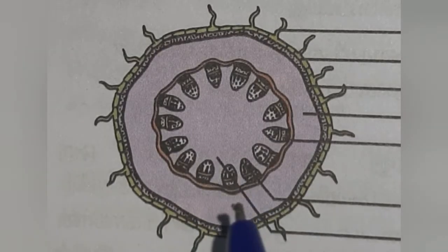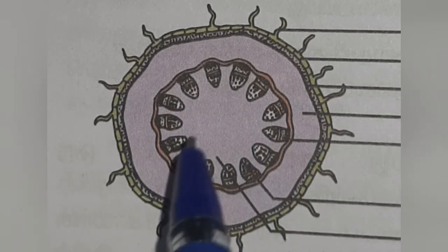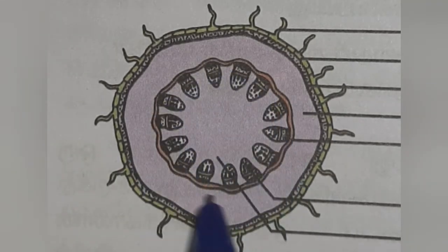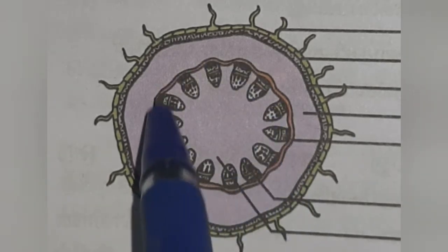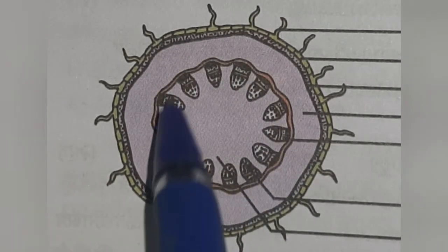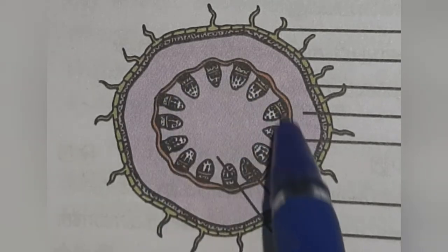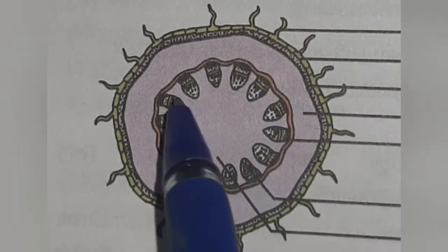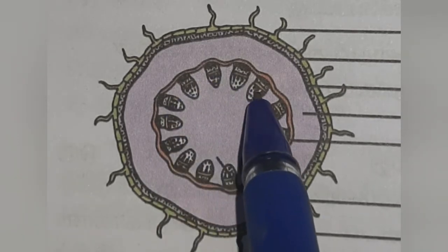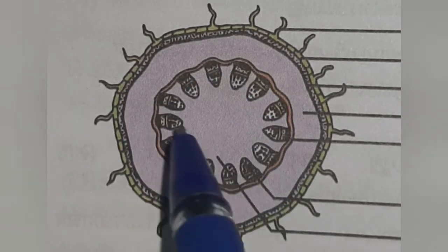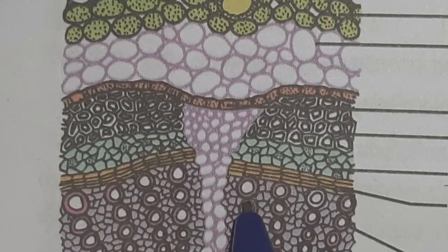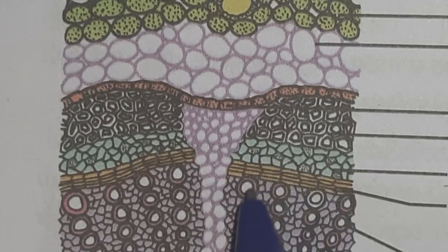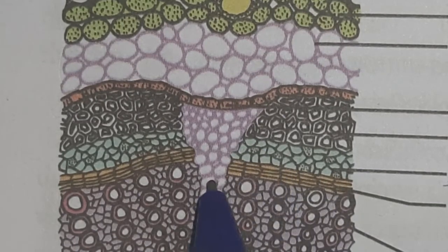A vascular bundle consists of xylem and phloem. The vascular bundles in the dicot stem are very less in number, uniform in size, and arranged in a ring. This is the xylem, and this is the phloem. Between the xylem and phloem, there is a cambium.